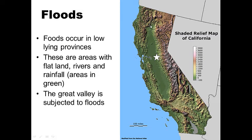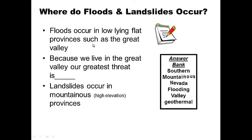Floods occur in low-lying provinces. All that rain is going to flow downhill to the flat areas, like the Central Valley, which is pretty much where we live. All that rain and snowmelt flows down the rivers, and we have a real flood threat here in the Roseville area. If there's enough rain and snowmelt, our area could become flooded. So floods occur in low-lying provinces like the Great Valley.